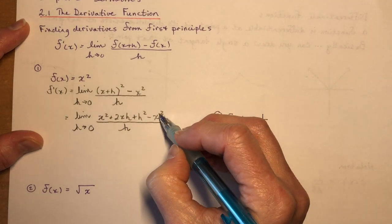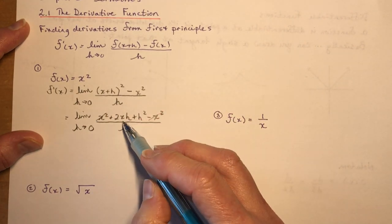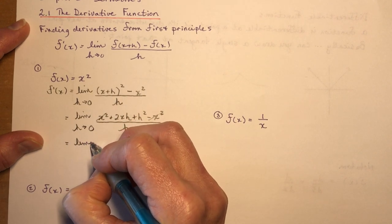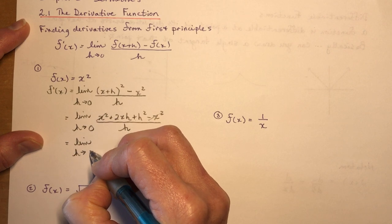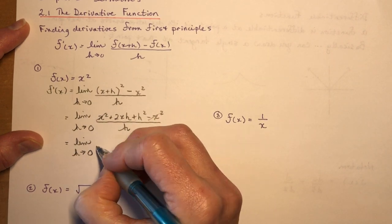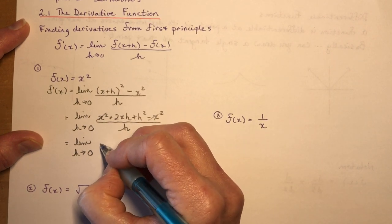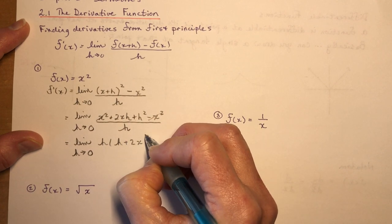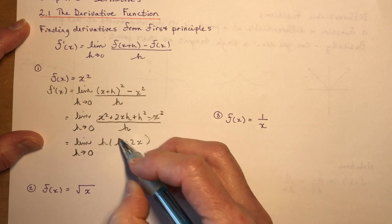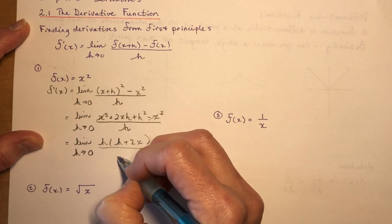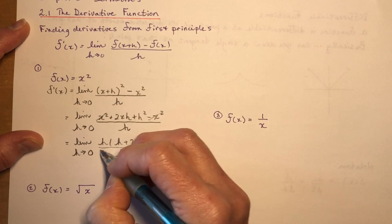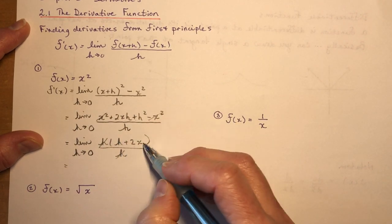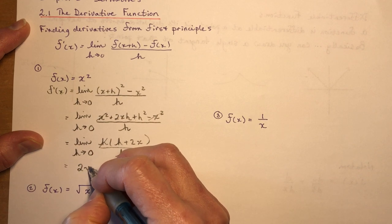So I square, twice the product, 2xh plus h squared minus x squared all over h. These x squared minus x squared cancel, everything else has an h. The limit as h approaches 0 of h times 2x plus h. Now I plug in h is 0. When h is 0, I end up with 2x.